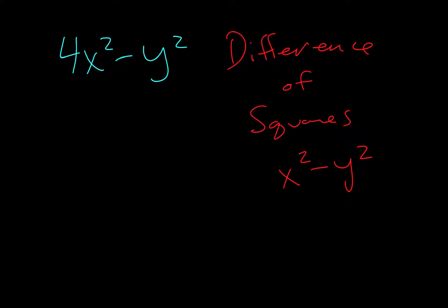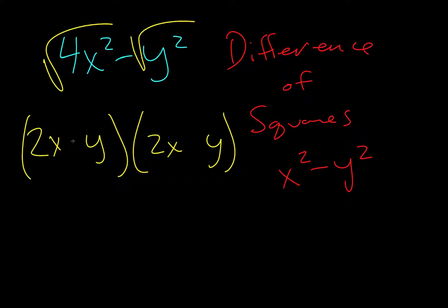The first thing is you need to determine what's being squared, or you need to take the square root of each piece. Don't worry about the minus sign. So if we square root 4, we get 2. Square root x squared, we get x. And if we square root y squared, we get y. We write this 2 times, and we get a plus sign and a minus sign. And that's it.